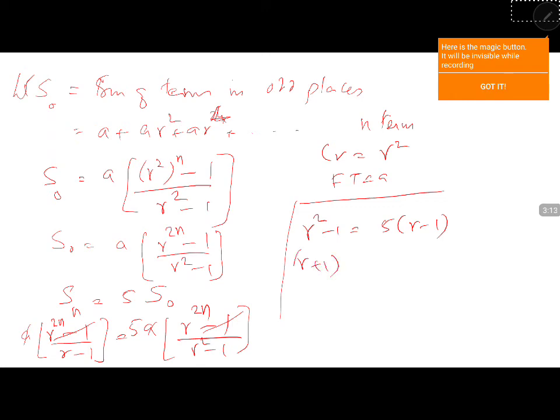(r + 1)(r - 1) = 5(r - 1), so r - 1 cancels, giving r + 1 = 5, which implies r = 4. Therefore, the common ratio equals 4.